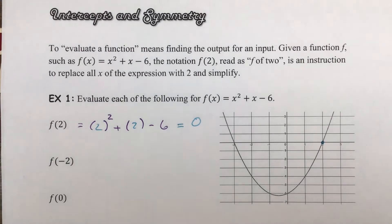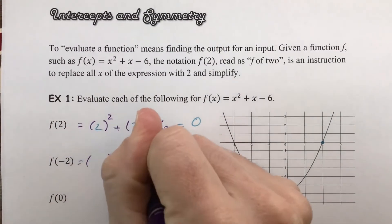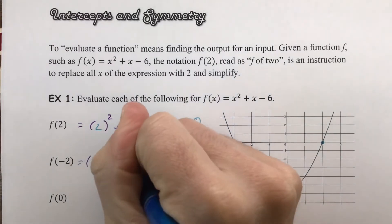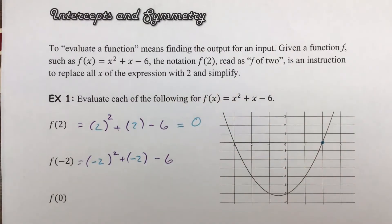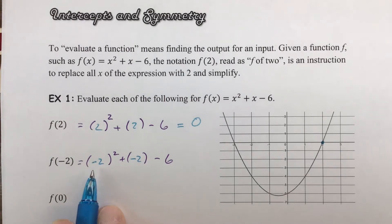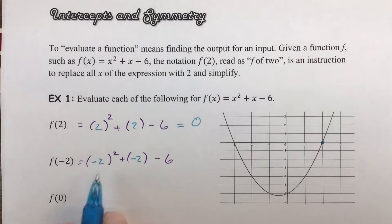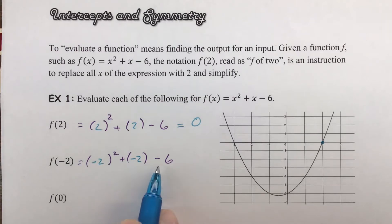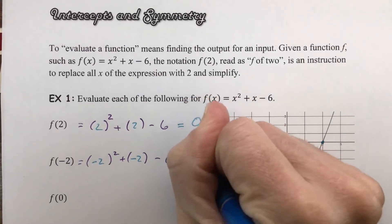Suppose we plug in a negative 2. Again, I'm going to use the parentheses, and right here I think it's important that we see them. It's important that we understand that the x is getting squared — so it's not that the 2 is getting squared, it's that the negative 2 is getting squared. Negative 2 times negative 2 is going to create a positive 4. We're going to subtract 2, so 4 minus 2 is 2. Then 2 minus 6 is going to give us negative 4.